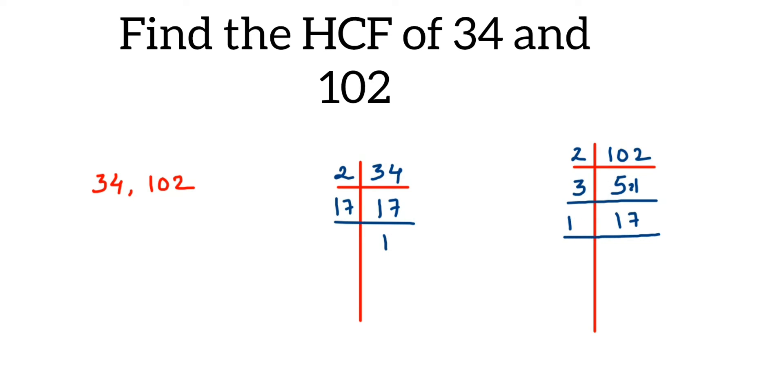Again 17 we got. 17 is a prime number, doesn't go in any table, so 17 ones are 17. So from here, 34 can be written as—write down the factors here—so 2 into 17.